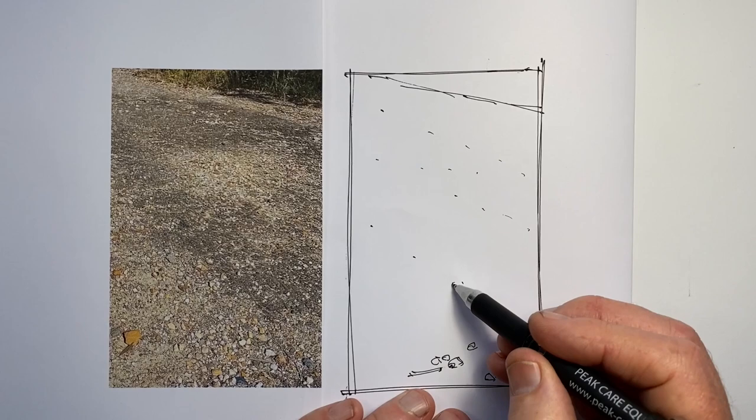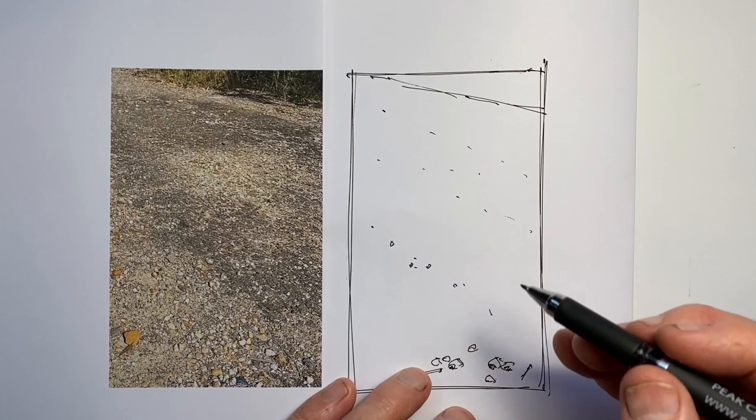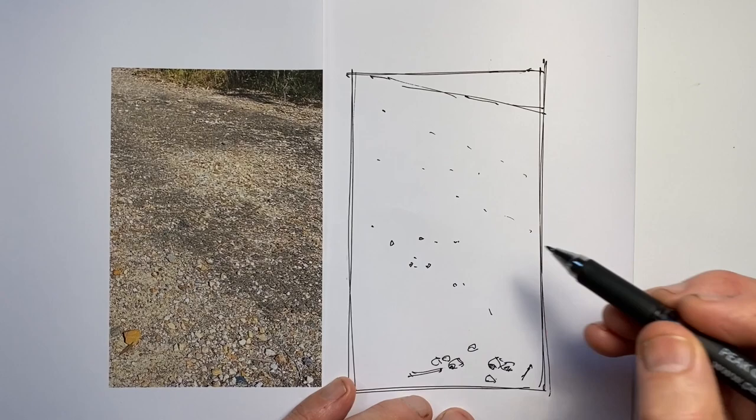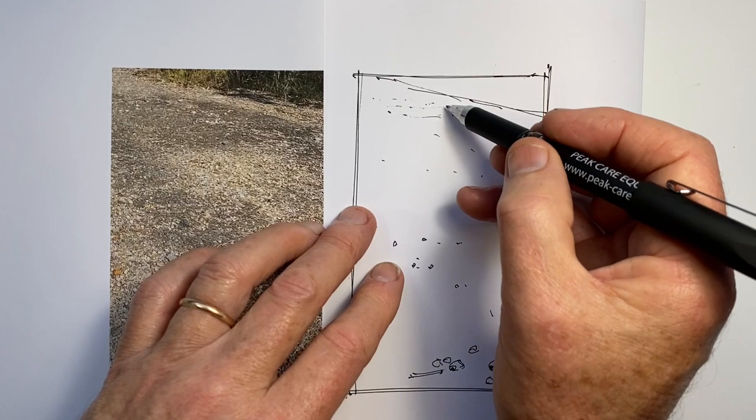But now I need to then do some positioning marks higher up where I'm working out up here, how large are my pieces of gravel going to be drawn? And by the time I get up here, how am I going to represent them?